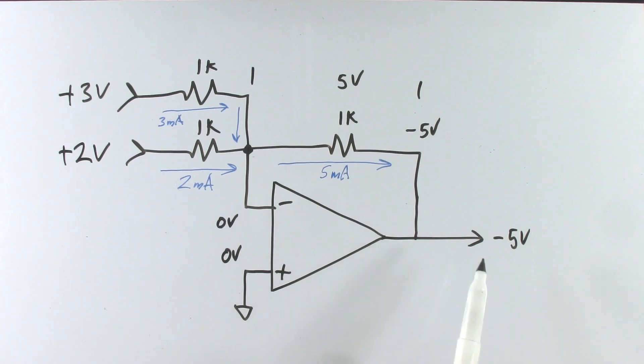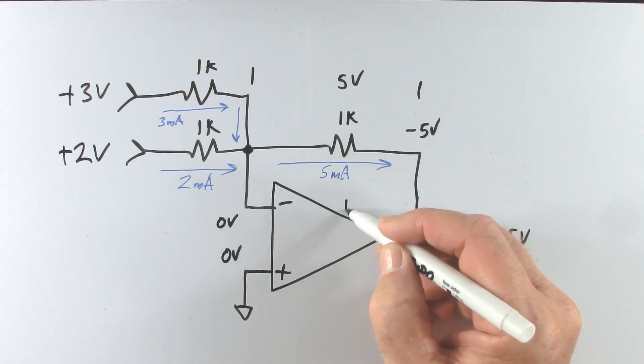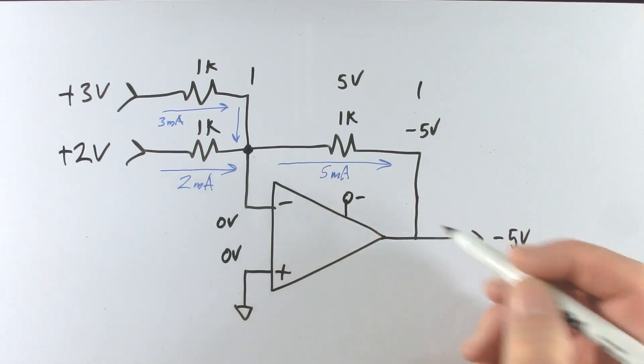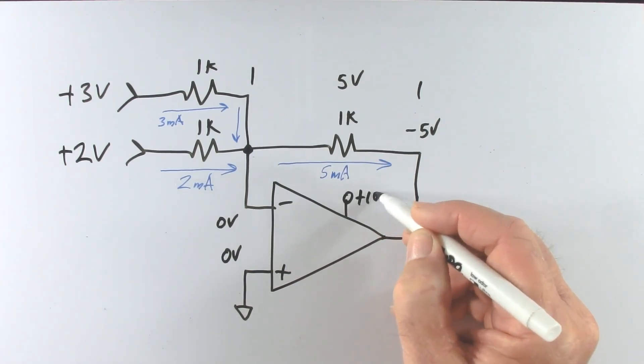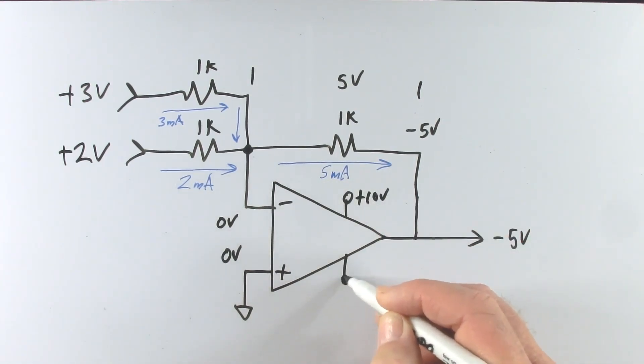Now since it's an inverting amplifier we do get a change in sign so if we need to have the same polarity we will have to have a second inverting amplifier to re-invert the voltage but that's only if we need it. Of course this amplifier will have to be supplied by two power supplies which sets the limit to how much of an input we can have.